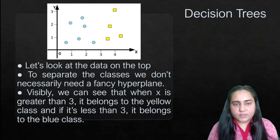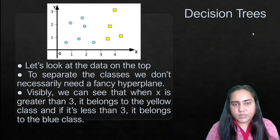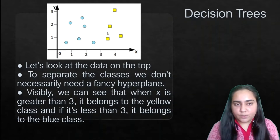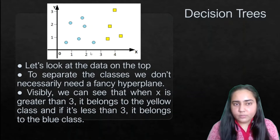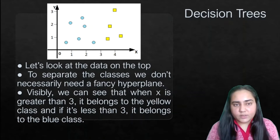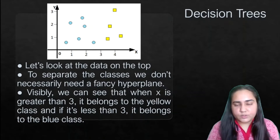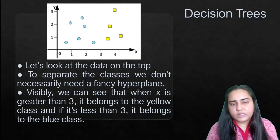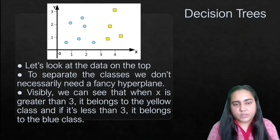whenever x is greater than three, all those data points are yellow boxes, and when x is less than three they are all blue circles. So less than three is the blue class and greater than three is the yellow class — that's quite easy to tell just by looking at the data.